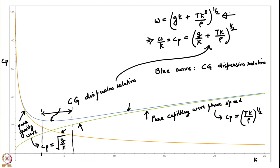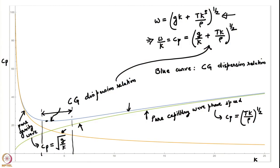In particular, the phase speed for a pure gravity wave is a monotonic curve, whereas the phase speed for the capillary gravity dispersion relation decreases at small k but then again starts increasing at large k, so there is a minimum. For sufficiently small k, the dispersion relation can be well approximated as a pure gravity wave. For sufficiently large k, it can be approximated as a pure capillary wave.